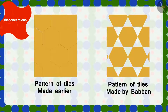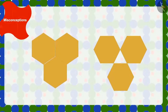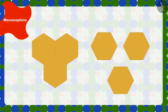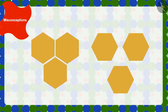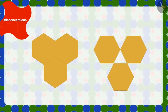Babban had used the same tiles that were already fixed on the floor. Then why did this happen? Some shapes are such that they can be joined in only one way, so that no space remains between them.